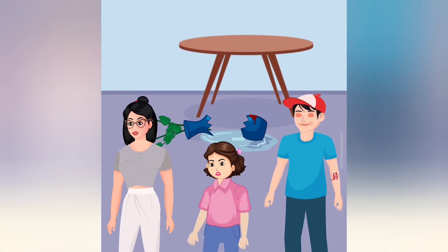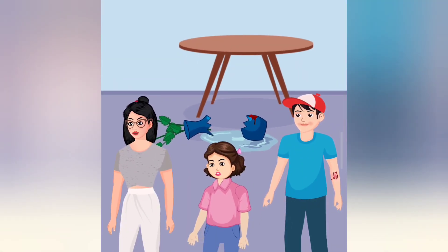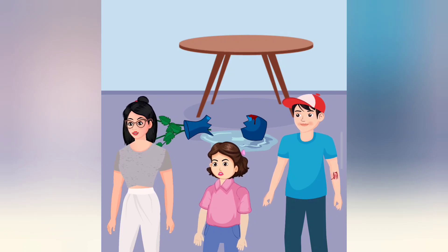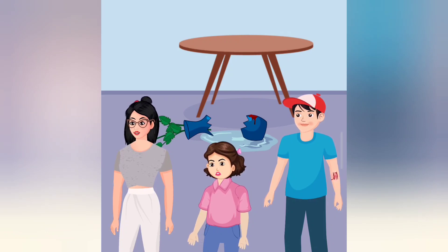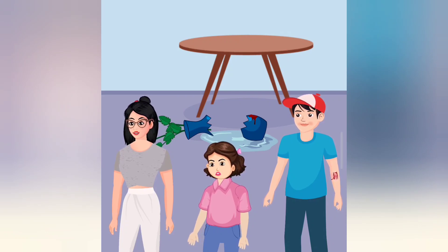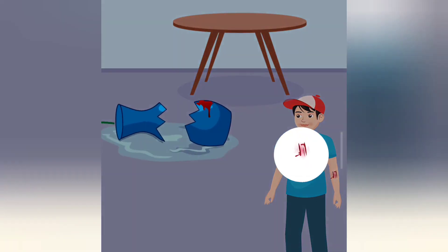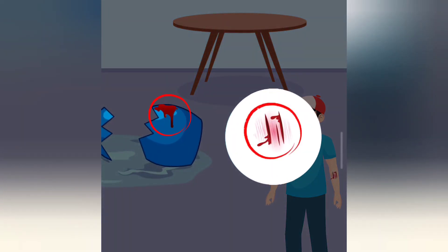Someone drew this flower pot. Look at the kids and find out who did it. A, B, C. Option C — he cut his hand and a blood stain can be seen on the flower pot.